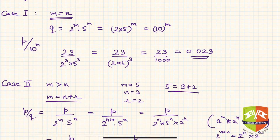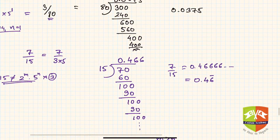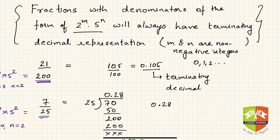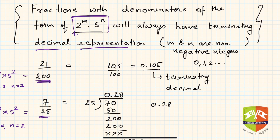So the key learning is: if you have fractions with denominators of the form 2 to the power m times 5 to the power n, it will always have a terminating decimal representation. Hope you understood the logic. Thank you.